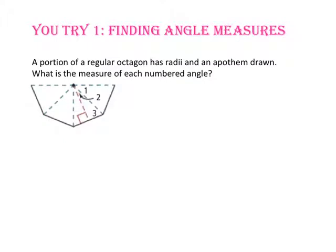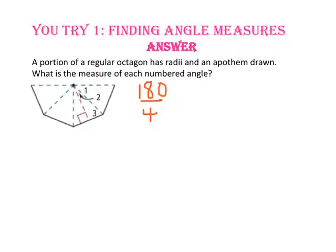Pause the video and do you try number 1. A portion of a regular octagon has radii and an apothem drawn. What is the measure of each numbered angle? Since we only have half of an octagon, we know that the sum of the four vertex angles shown will give us half of 360, or 180 degrees. Or we can take 360 and divide it by 8, since there are 8 vertex angles in a regular octagon that complete a circle. So the measure of angle 1 is 45 degrees.